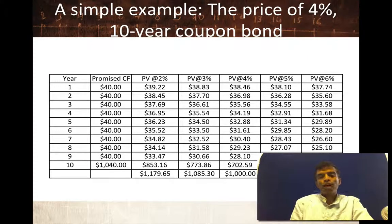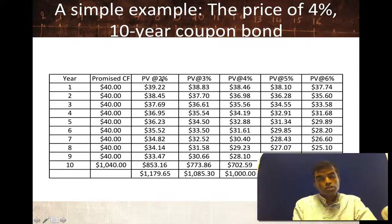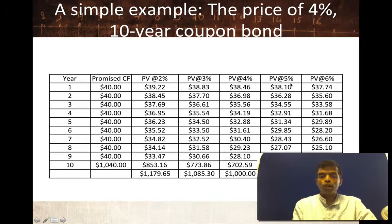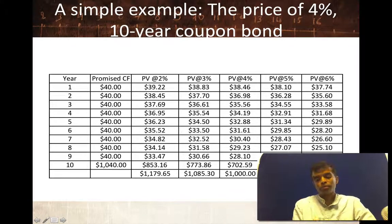I've computed the value of those fixed coupons and face value as a function of the market interest rate. If the market interest rate is 4% — the middle column — the value of the bond is exactly equal to the face value: that's a bond that trades at par. If the interest rate is 2%, the present value of your cash flows is $1,180 — an 18% gain. If rates go to 3%, the value increases to $1,085, an 8.5% increase. However, if interest rates rise above 4%, the bond drops below par. At 5%, the present value gives you $923 — a drop of about 7.7% from par. That bond trades at a discount because the market interest rate exceeds the coupon rate.